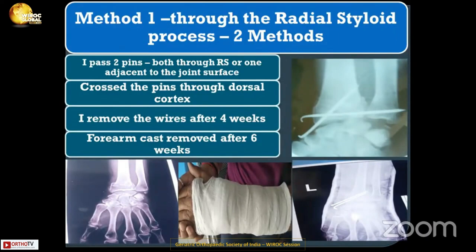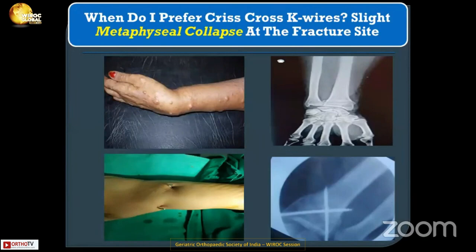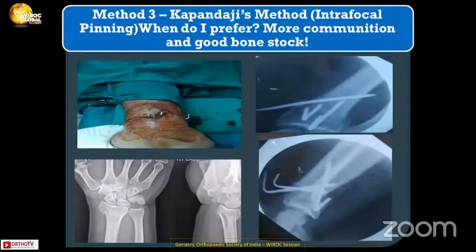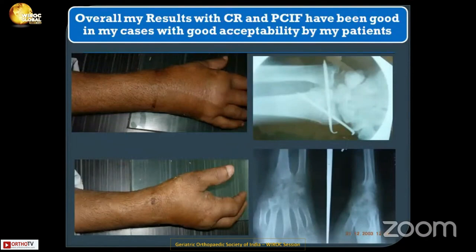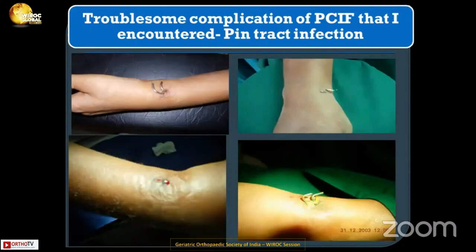For radial styloid pinning, I use two methods: two pins across the radial styloid, or one pin through the radial styloid and another just adjacent to the wrist joint — results are almost the same. I remove the wires after four weeks and the forearm cast after six weeks. I use criss-cross technique when I find metaphyseal comminution and collapse at the fracture site after reduction. I use intrafocal pinning when there is more comminution with good bone stock, giving stable fixation with extremely good results. Results have been good with good patient acceptability across these techniques.